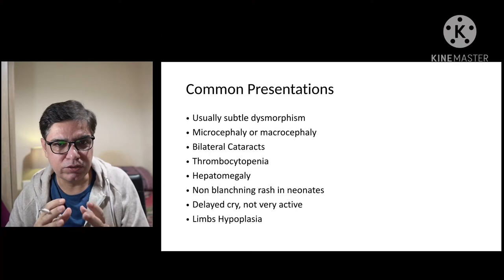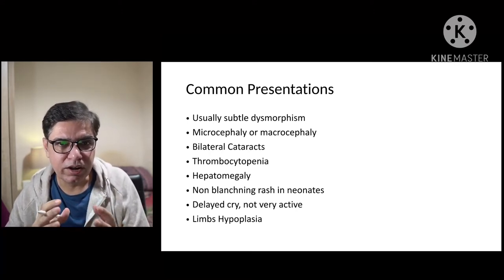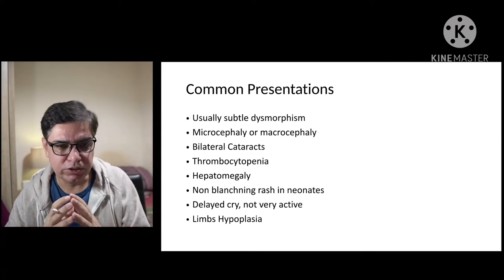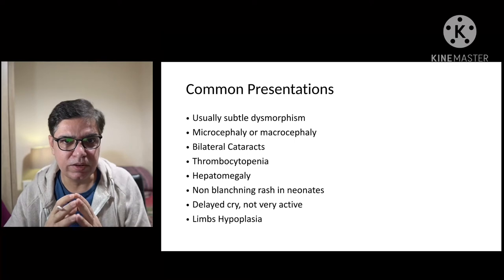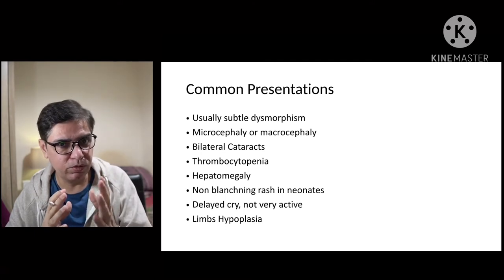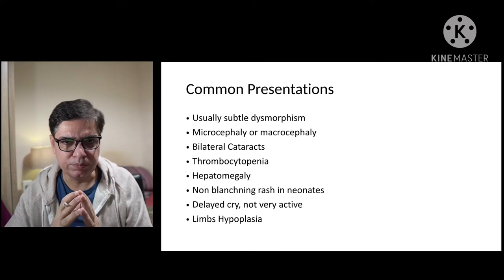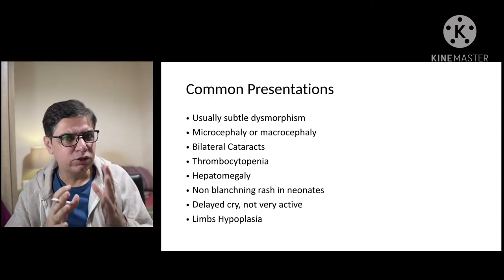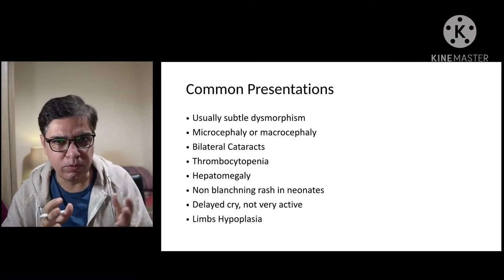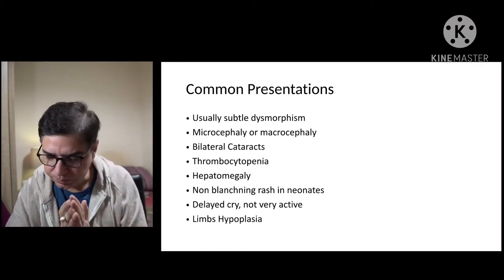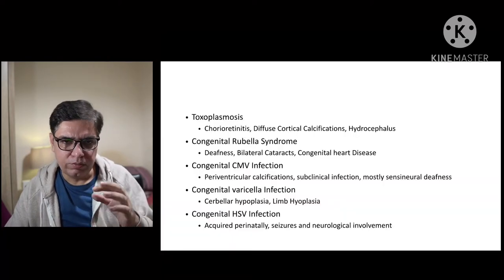If a newborn's brain is affected by a congenital TORCH infection, they may have a delayed cry, be poorly active, or have a very poor suck. Limb hypoplasia — where limbs are not fully developed, digits are missing or few — is another indicator. These are some common presentations that, among a wide range of differentials, should prompt you to keep TORCH infections in mind and work up accordingly, especially when history and other circumstances support it.